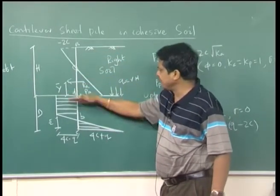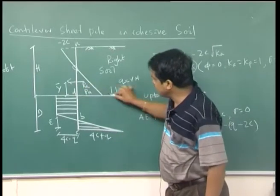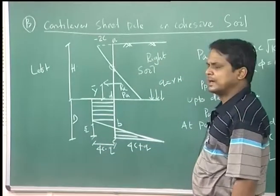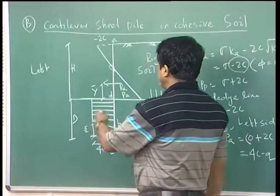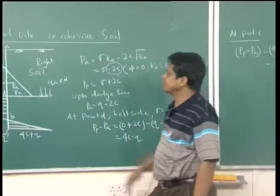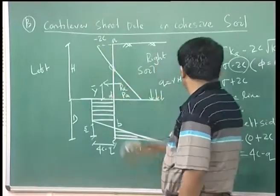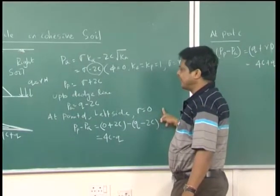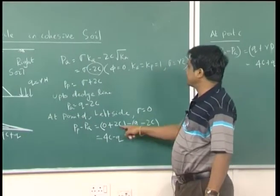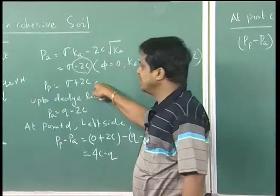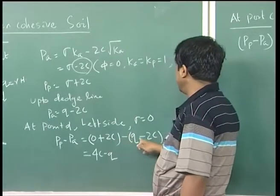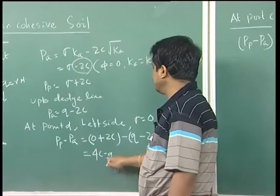At point D, on the left side of the boundary, there is no overburden pressure since that side is empty, so σ = 0. Writing PP − PA: passive earth pressure is σ + 2C = 0 + 2C, and active is −(Q − 2C), giving 0 + 2C − (−2C) − Q = 4C − Q.